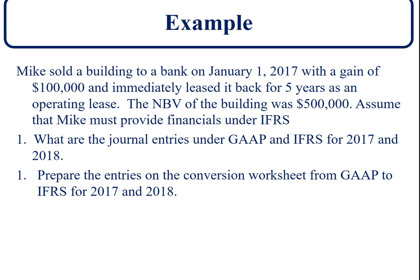Now let's take a look at an example so we can see the different treatments between the international standard and GAAP. In this example, Mike sold the building to a bank on January 1, 2017, with a gain of $100,000, and immediately leased it back for five years as an operating lease.